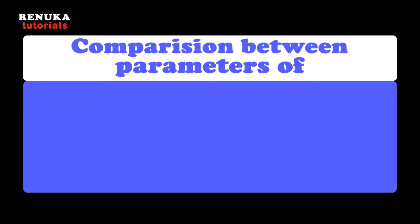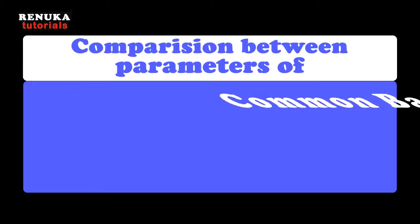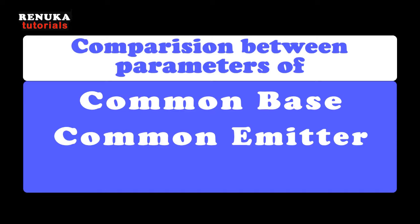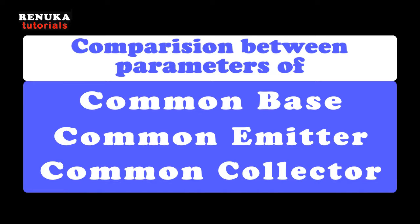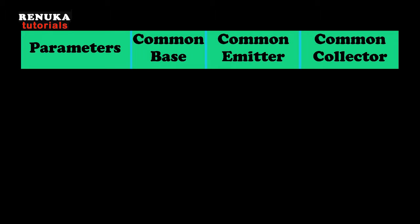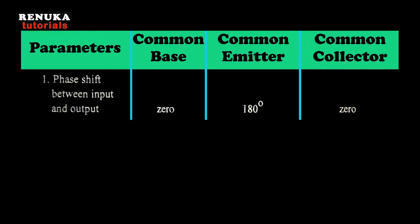Now let us compare the common base, common emitter, and common collector configurations on the basis of their parameters. The first parameter is the phase shift between input and output: in common base it is 0°, in common emitter it is 180°, and in common collector it is 0°.